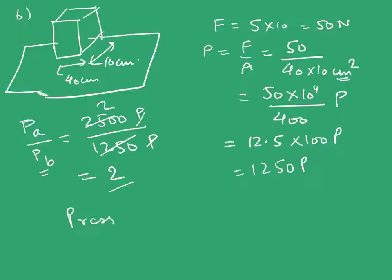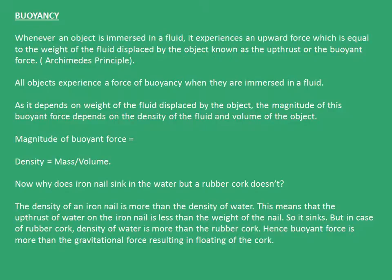Hence we say that pressure is inversely proportional to the area for a given constant force acting on a body. If the force is constant, pressure in two different situations will be inversely proportional to the area in contact with the surface. Now let's move on to buoyancy.